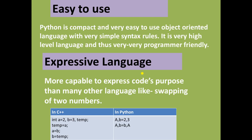The first feature is easy to use. Python is compact and very easy to use. It is an object-oriented language with its own rules. It is a high-level language and a very programmer-friendly language.